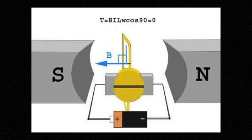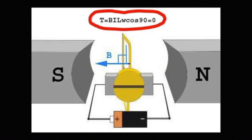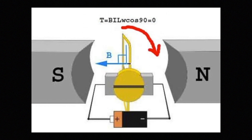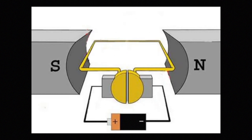After clockwise rotation of 90 degrees, the turn comes to a vertical position with respect to the magnetic field. At this position, there is no current in the conductors of the turn as the conductor and brush rest in between the two commutator segments. Therefore, there is no force acting on the conductor. But due to the moment of inertia, the turn continues to rotate and comes to the horizontal position again.